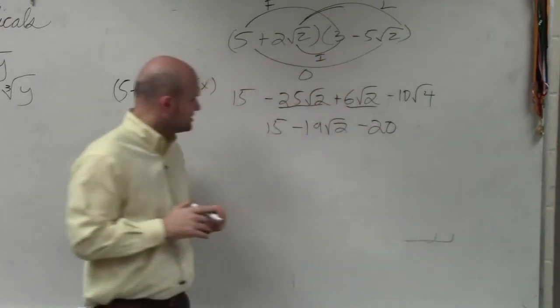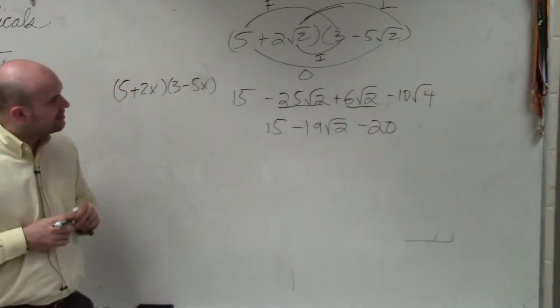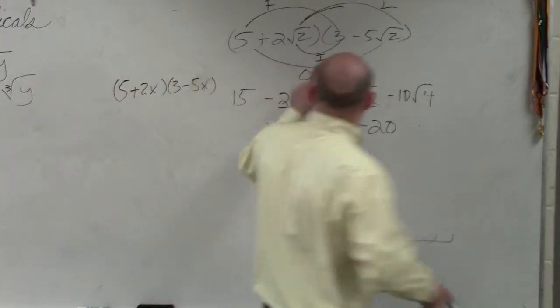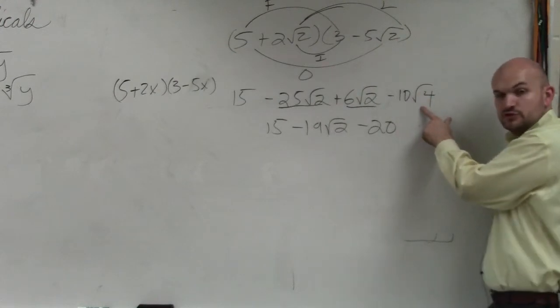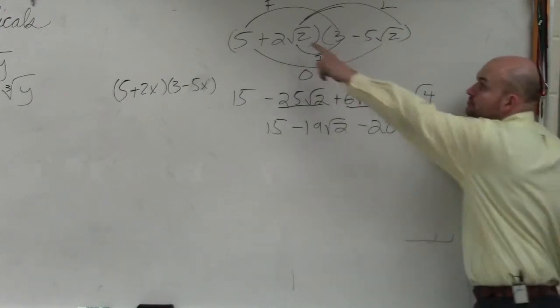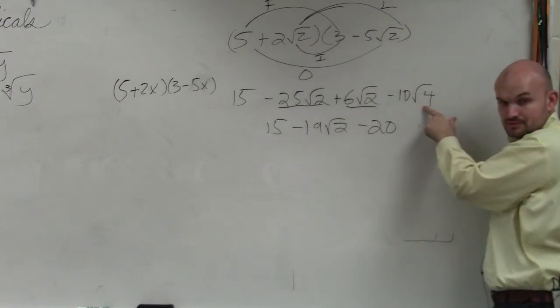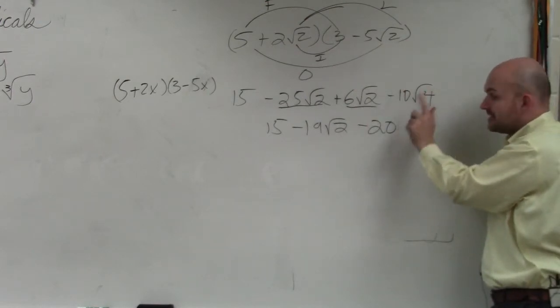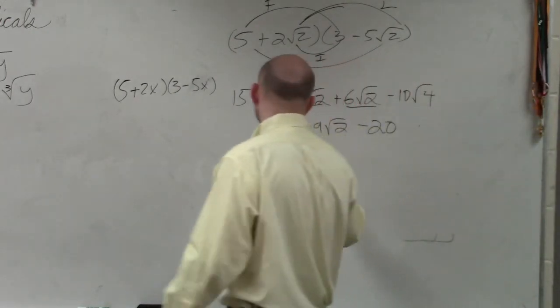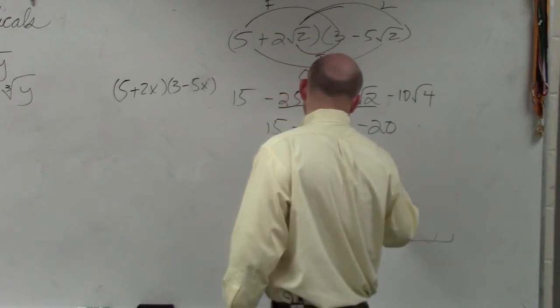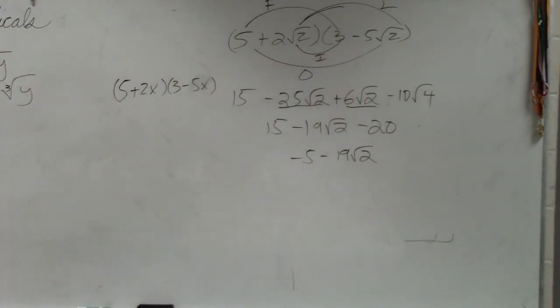Jennifer, I guess you're not interested in improving this, are you? OK, so remember, square root of 2 times square root of 2 is square root of 2 squared, which is square root of 4. 2 times 2 is 4, right? Square root of 4 is 2. 2 times negative 10 is negative 20. 15 minus 20 is negative 5 minus 19 square root of 2. And that is your final question.